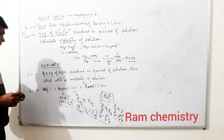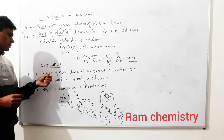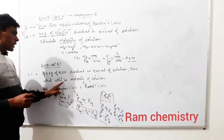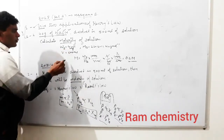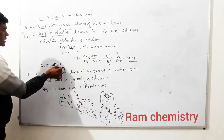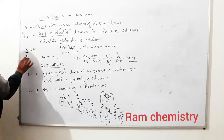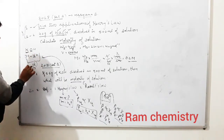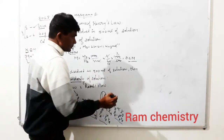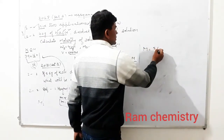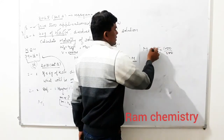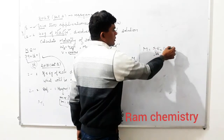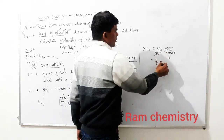Ab hum is numerical ko solve karte hain: 5.6 gram of KOH dissolve kiya gaya hai 500 ml mein. Aapko molarity nikalni hai. KOH ka molar mass: K = 39, O = 16, H = 1 = 56 gram per mol. Molarity = weight of solute (5.6) upon molar mass (56) into 1000 upon volume (500) = 0.2 M.